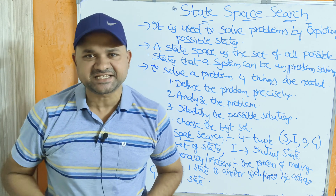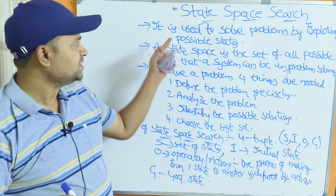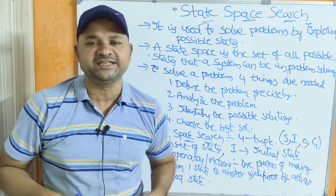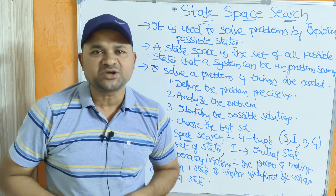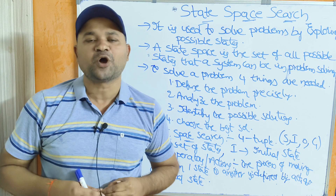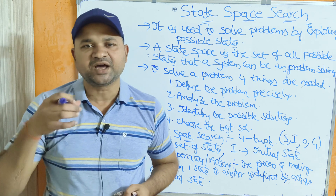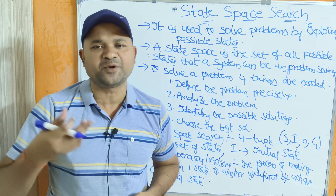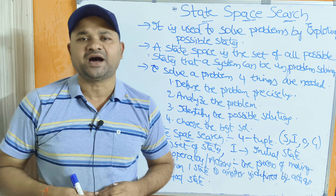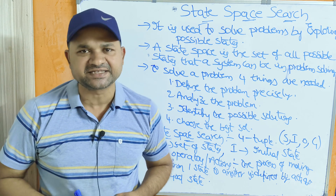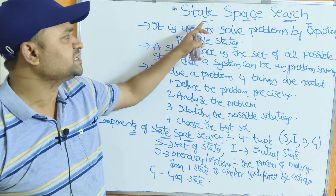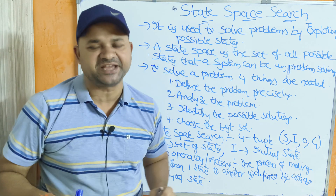Let us discuss state space search in artificial intelligence. The major goal of artificial intelligence is problem solving. In order to solve problems, we use artificial intelligence, and mainly for solving problems, we use state space search.